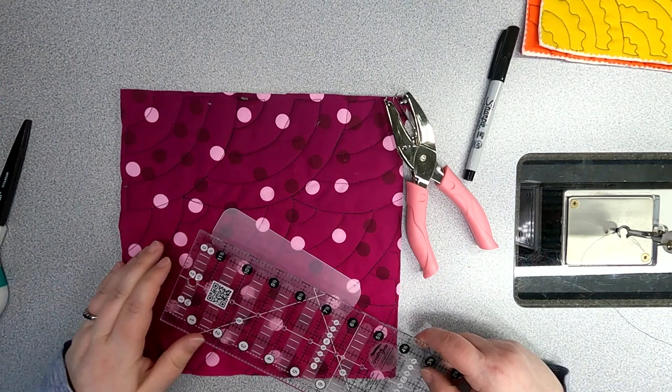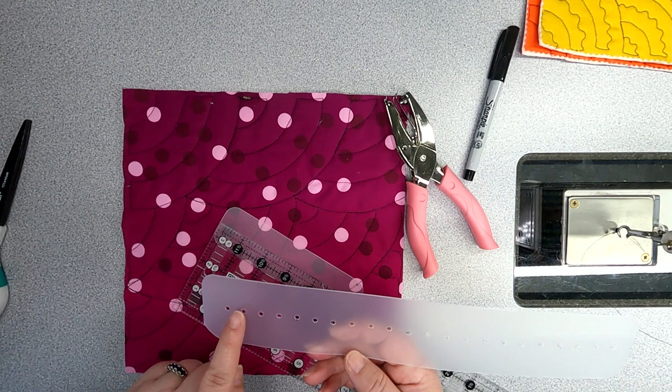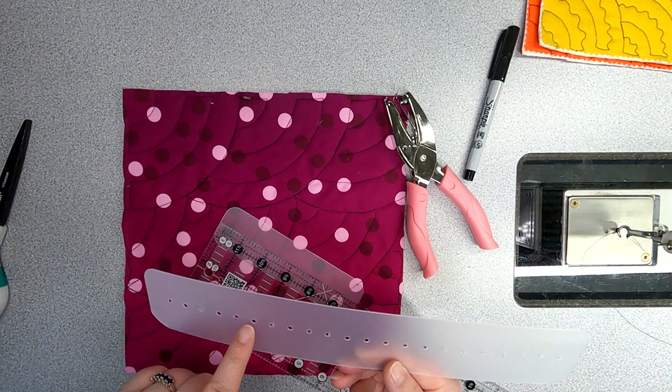Now the distance between the holes is another thing that is up to you. On this template I marked every half inch and that's a pretty versatile distance because you don't have to use every hole. You can use every other hole for an inch. Some people like to mark every three quarters of an inch. How far apart do you generally want your quilting lines? I'm going to stick with a half inch distance.